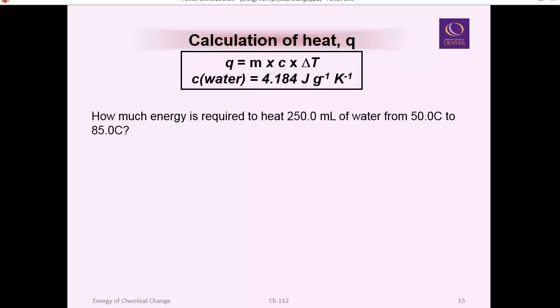Let's talk about using the calculation of heat. This is the formula, MC delta T, or as we discussed earlier, it could be NC delta T. When you're staying within the same state and you're just changing the temperature of something. So how much energy is required to heat 250 mils of water from 50 C to 85 C?